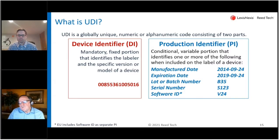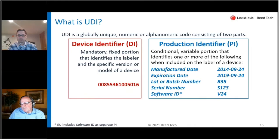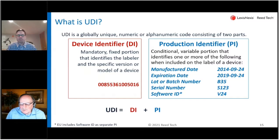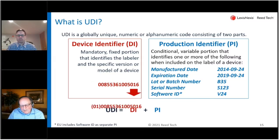Those additional controls — such as manufacturing date, expiry date, lot, batch number, serial number, and for UNIMED European Union specifications, a software ID production identifier — if they are applicable and on the labels, then you simply add those two components together to get a full UDI.